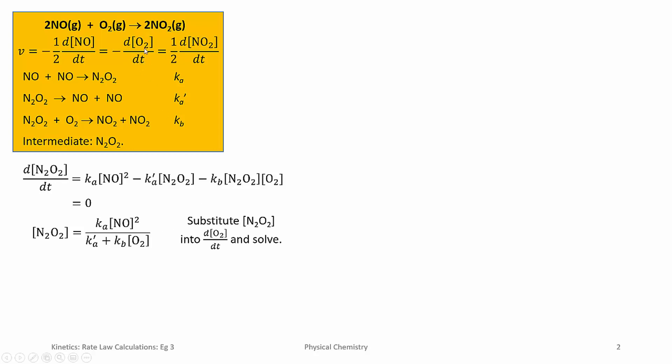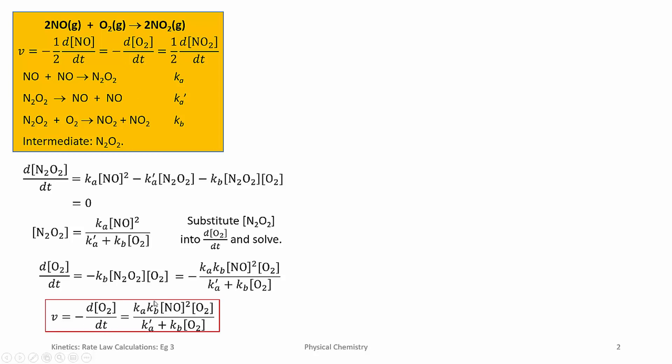Now that we have this, we can substitute into the net rate of change of oxygen. Here's our expression for the net rate of change of oxygen. It only appears in this last reaction here. We're going to substitute for N₂O₂, which we just derived. We do that and we arrive at this expression. If we want to relate it to the rate of reaction, we just need to take the negative of this net rate of change. There's our rate law.